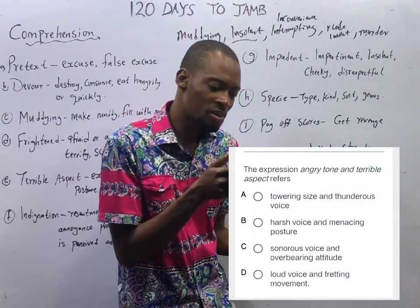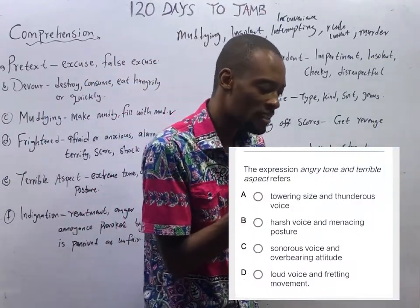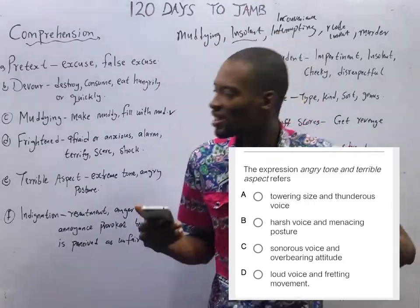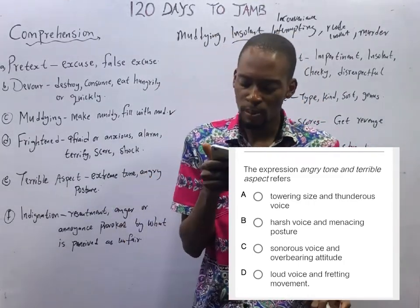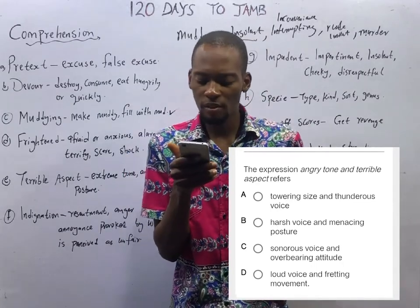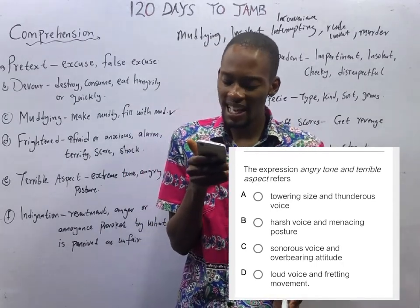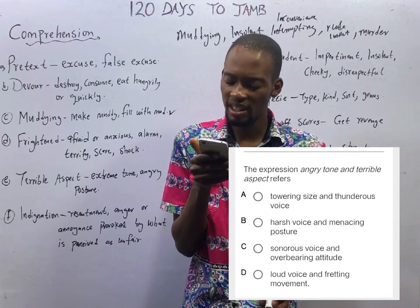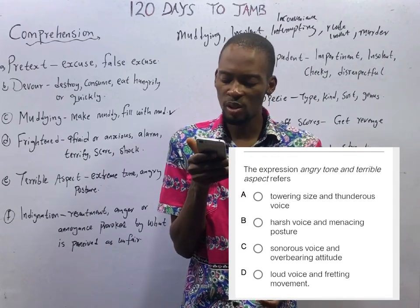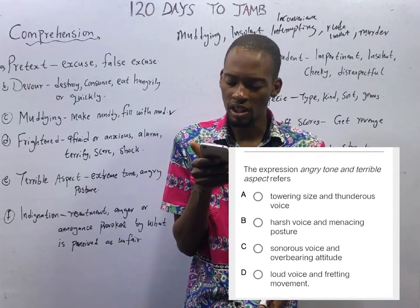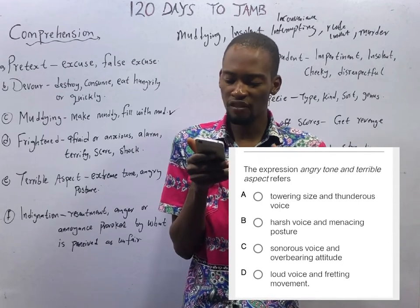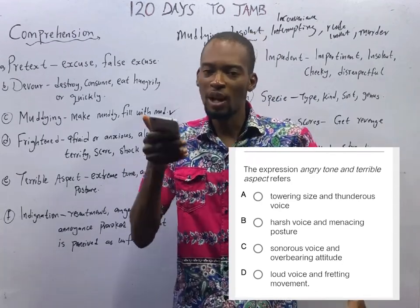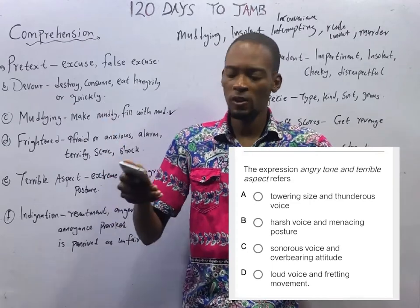The expression 'angry tune and terrible aspect' refers to harsh voice and menacing posture — as I already explained. It does not mean touring sides and thunderous voice, sonorous voice and overbearing attitude, or loud voice and fretting movement. Angry tune means harsh voice; terrible aspect means menacing posture. So that best interprets both statements.